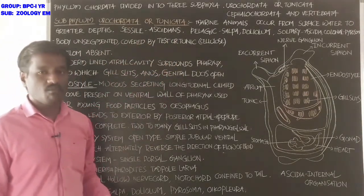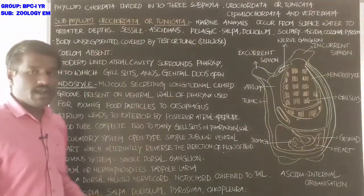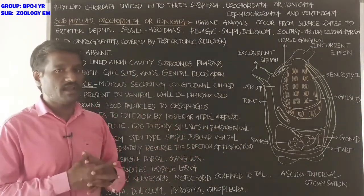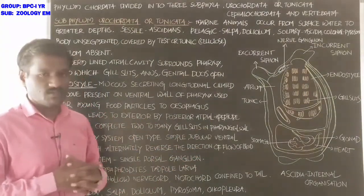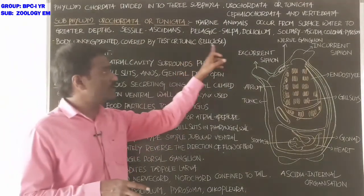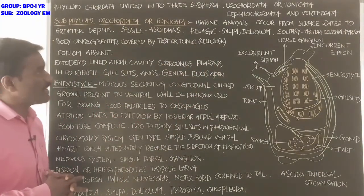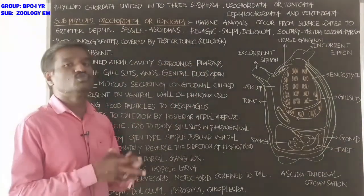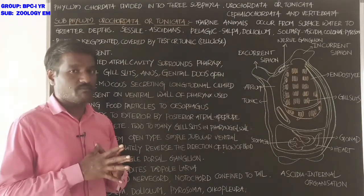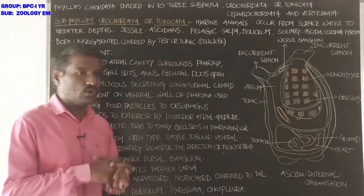The body is unsegmented and covered by a test or tunic. The outer surface of the body is covered by a hard substance called the test or tunic, which is made up of cellulose. Hence these animals are also called tunicates.